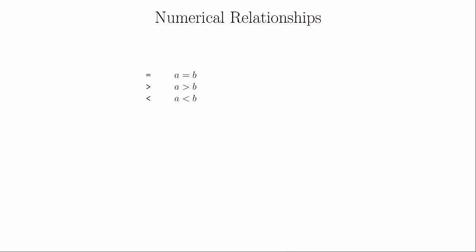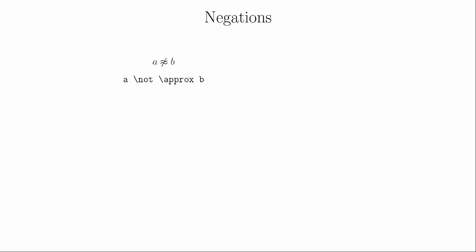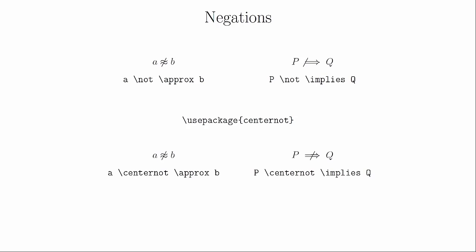For ordering symbols on the real numbers, equal to, greater than, and less than are just the standard symbols on the keyboard. For greater than or equal to and less than or equal to, we have \geq and \leq, and all of these commands have negations. There's also a command for approximately equal to. The native LaTeX command to create negations is to type \not in front of the symbol. This works sometimes, but other times it misses the mark. To correct this, you can use the centernot package and the \centernot command, which calculates the horizontal size of the object and draws the slash accordingly.